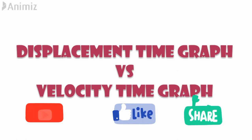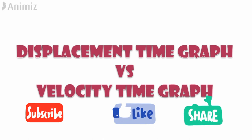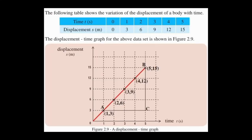First, we'll see what is the relationship between the displacement and velocity. Here, you can see a displacement time graph illustrating the motion of a car. This graph is plotted by making the time on the x-axis and the displacement on the y-axis. The displacement is shown as s with unit meters, and the time is shown as t with unit seconds.